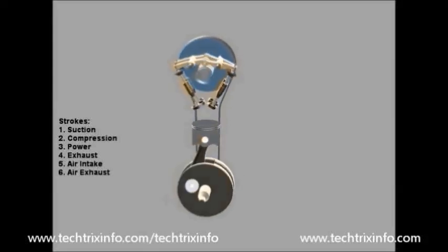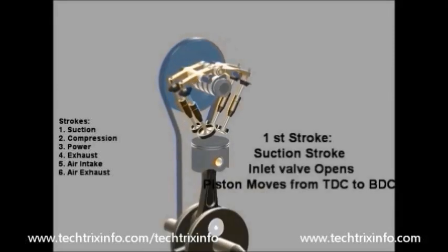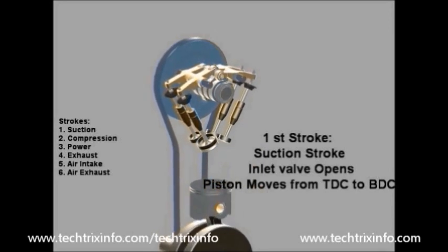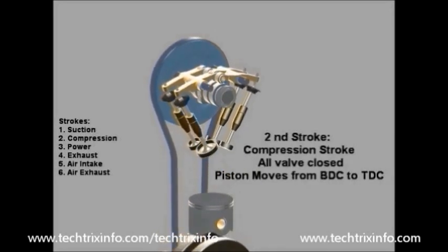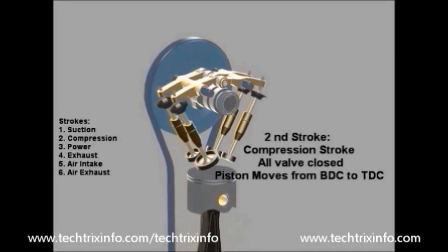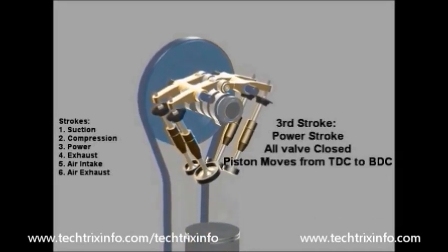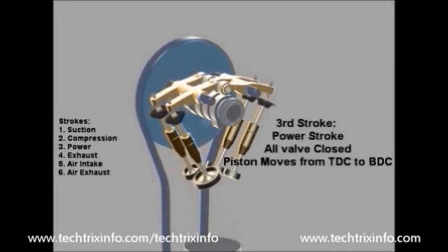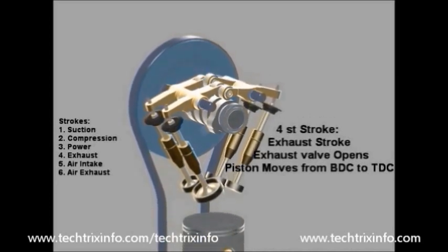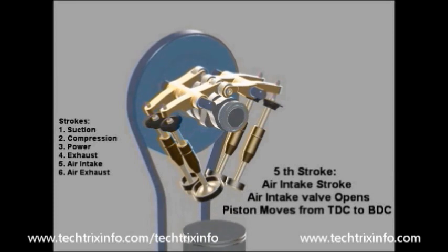Animation of the working of a six-stroke engine. The first stroke is a suction stroke — the inlet valve opens and air-fuel mixture comes in. Then it's a compression stroke where it is compressed. Then the spark happens and the power stroke occurs. Now it is the exhaust stroke where the exhaust valve opens.